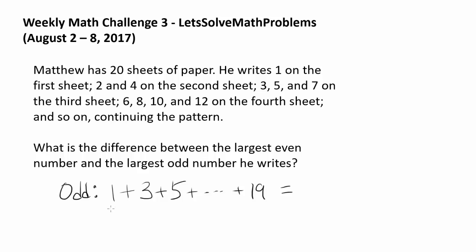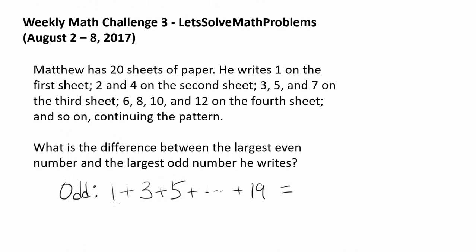And what is this? Well, when you're adding odd numbers, you go by squares. You have one squared, two squared, three squared and so on. So since you have 10 of this, it's going to be 10 squared or 100.